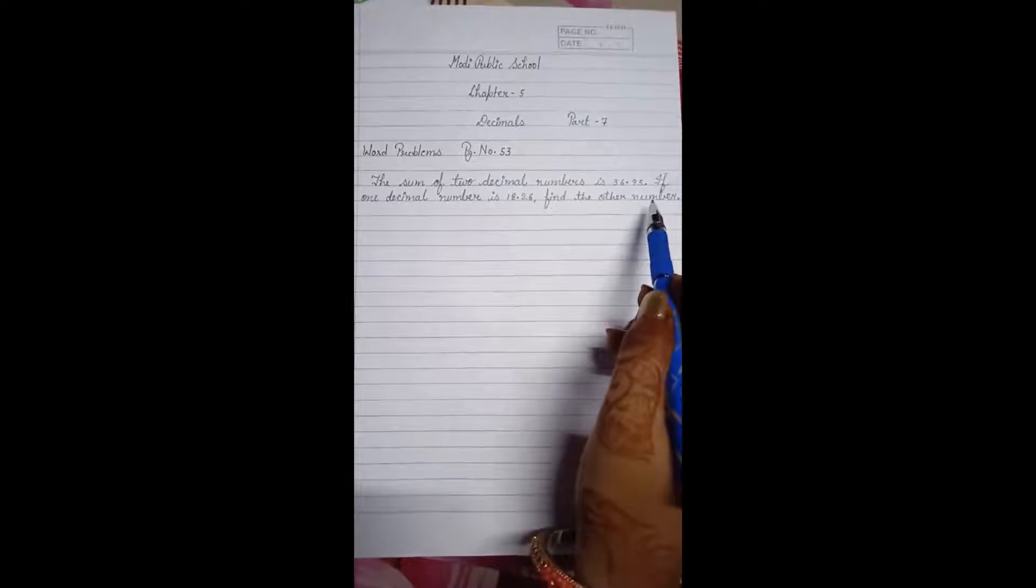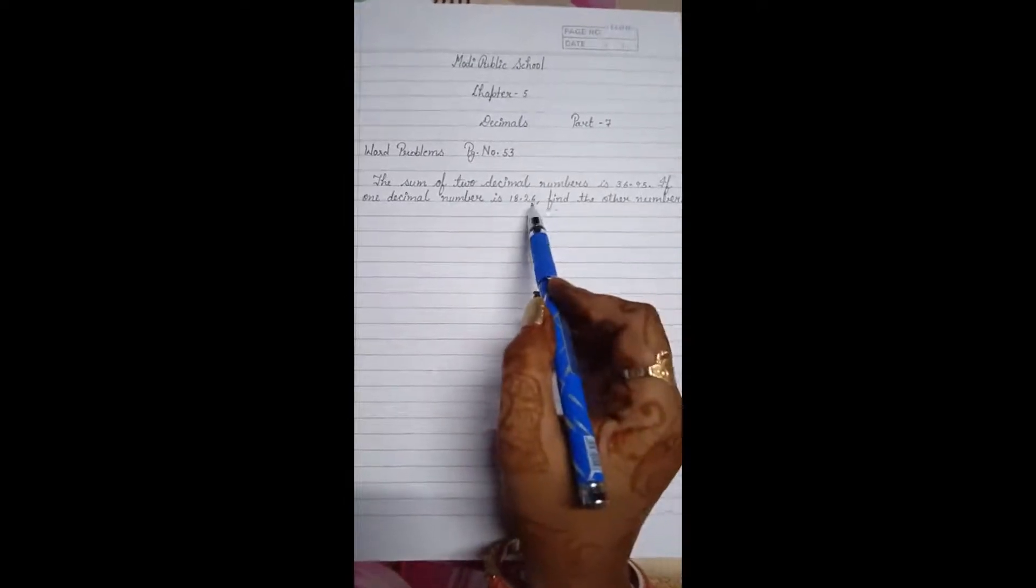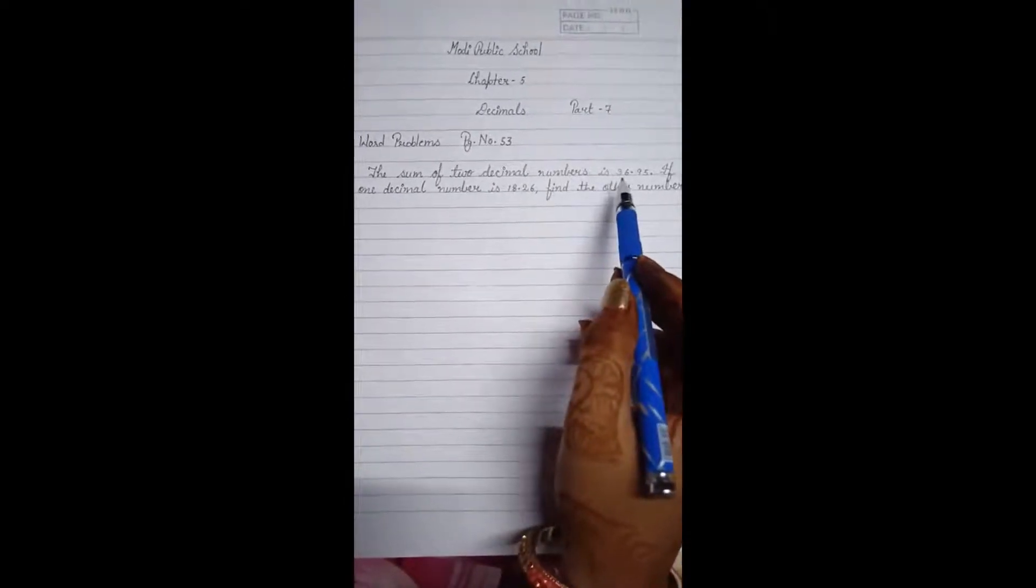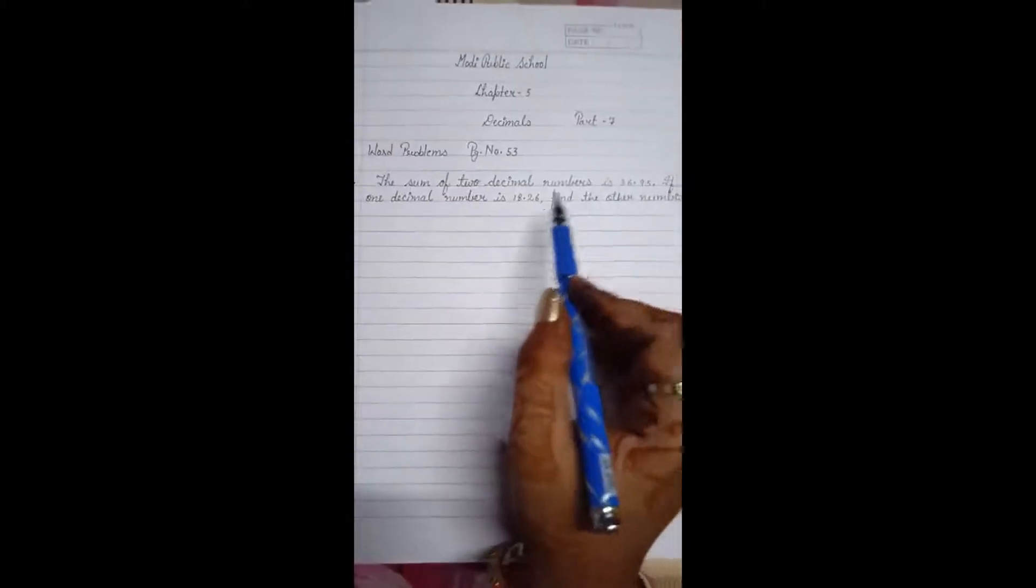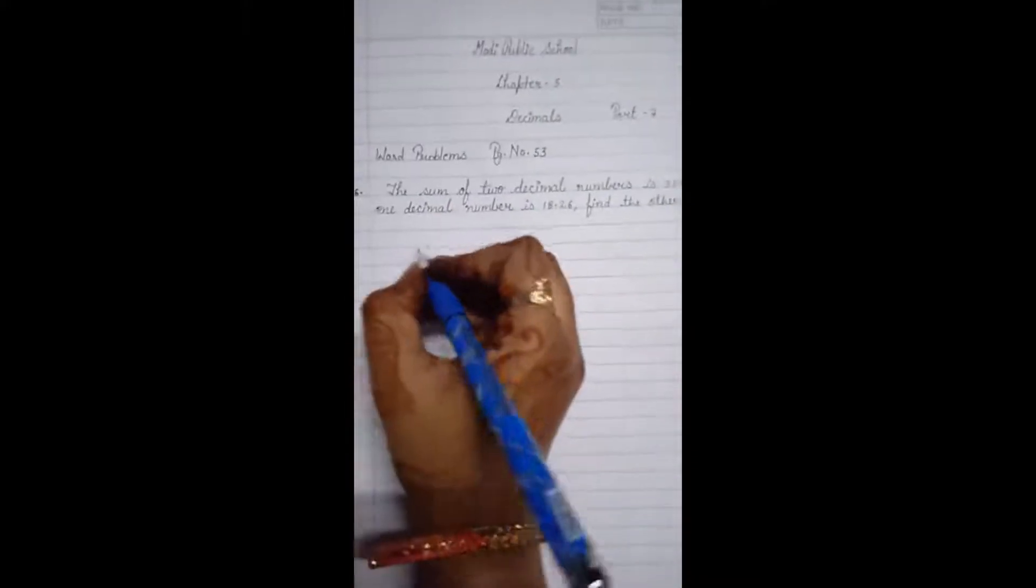To find out the other number, we have to subtract the smaller number from the greater one. Let us solve.